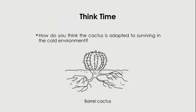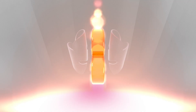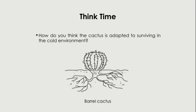How do you think the cactus is adapted to surviving in the cold environment? So pause this video to have a think. The first observation from this picture is that this barrel cactus has really, really long roots. It takes very long for the water from the soil to be absorbed and transported to the plant itself.